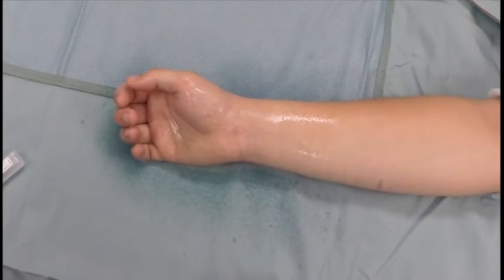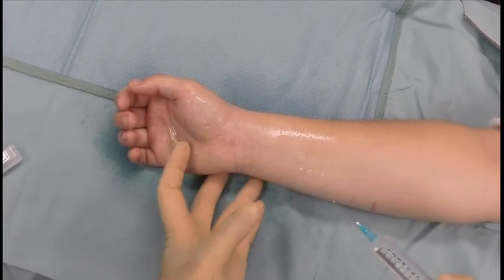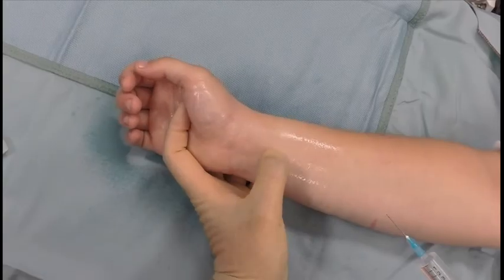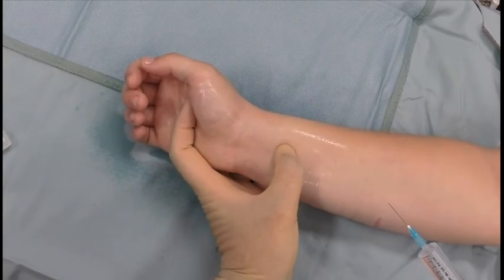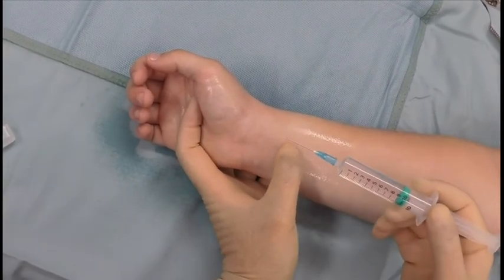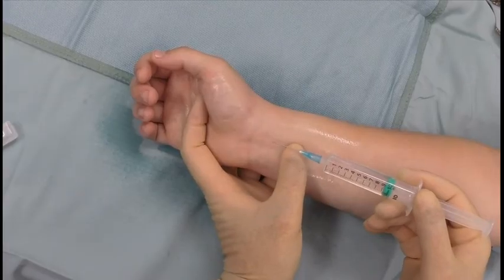The needle is inserted at 45 degrees, pointing distally, and 2cm proximal to the wrist crease, so no greater than the depth of the undersurface of palmaris longus, around 4mm maximum.